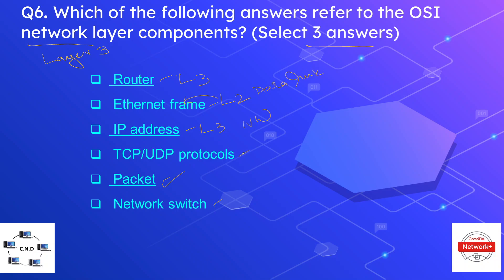TCP and UDP protocols are layer four protocols, and network switch is a layer two device.